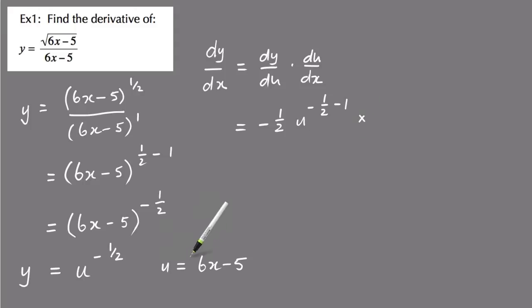And then you're timesing by du dx, and the derivative of u with respect to x is just 6, so du dx equals 6. And then minus 1 half times 6 is minus 3, and then that becomes u to the minus 3 on 2. And then putting back the 6x minus 5 in place of the u, 6x minus 5, and keeping that power minus 3 on 2, and that would be the correct way of writing the answer.